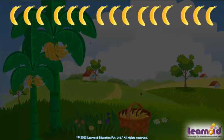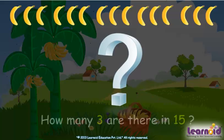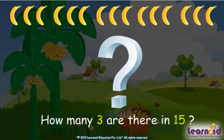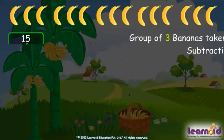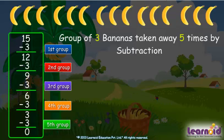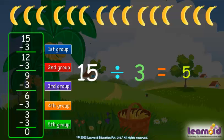These are 15 bananas. Let's see how many threes are there in 15. A group of three bananas was taken away five times by subtraction. We can write 15 divided by three is five.